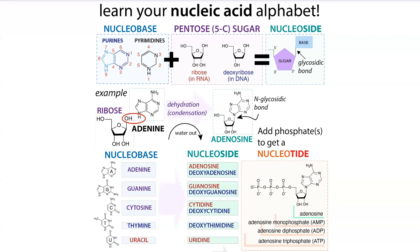So it's a nucleoside monophosphate if it has one phosphate group, a nucleoside diphosphate if it has two, and a nucleoside triphosphate if it has three. For the DNA versions, it would be a deoxynucleoside monophosphate, diphosphate, or triphosphate, because in DNA we have deoxyribose as our sugar — we're missing the 2' OH, whereas in ribose you have that OH.